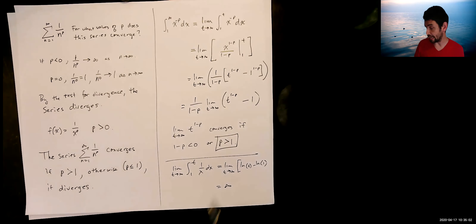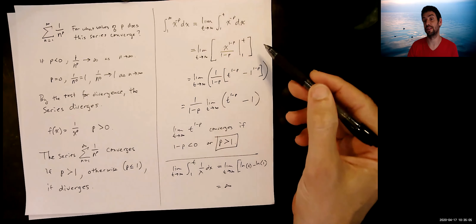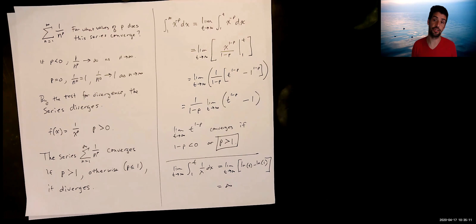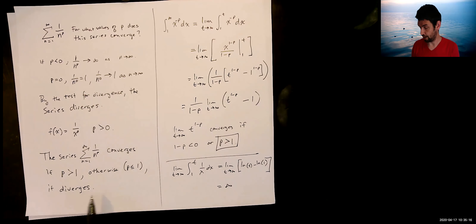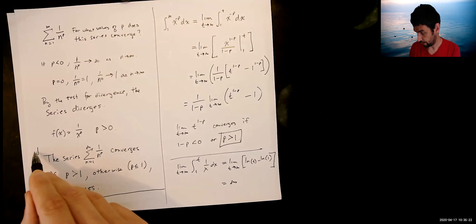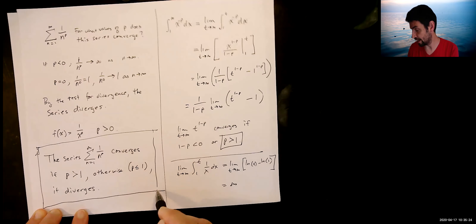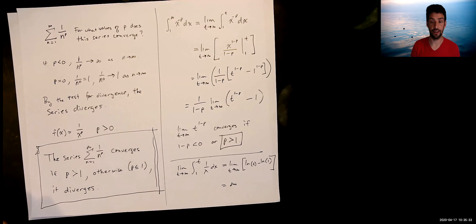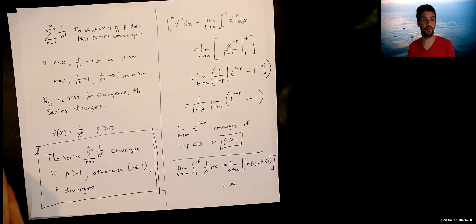This result was derived using the integral test — the textbook also computes it in the section on improper integrals. In any event, we can now use this P-series rule directly: anytime you have a series of this form, if P is greater than 1 it converges, and if P is less than or equal to 1 it diverges, without needing to re-justify it each time.